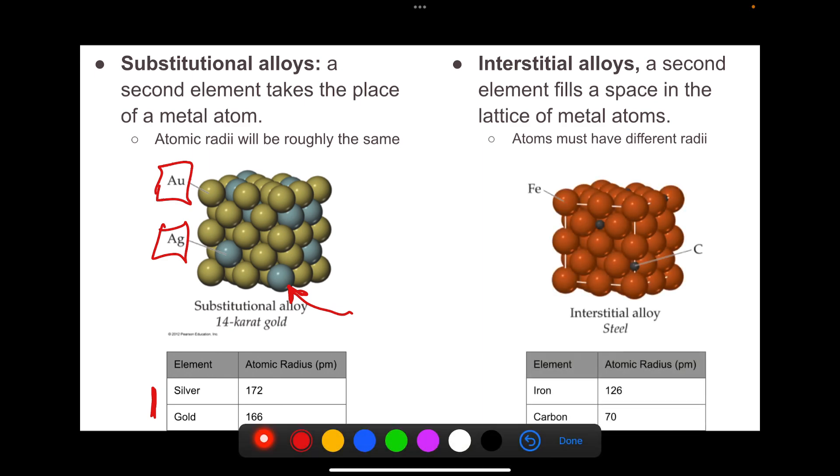For instance, steel is a substitutional alloy. Steel is predominantly iron, but small amounts of carbon are added. Notice those small carbon atoms can fit right in between the iron atoms. This is possible because the atomic radii are very different. Carbon is much smaller than iron. It can kind of fit into those small spaces.